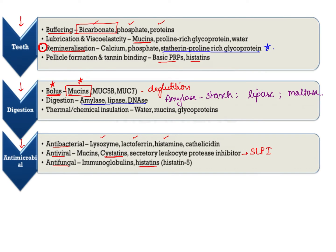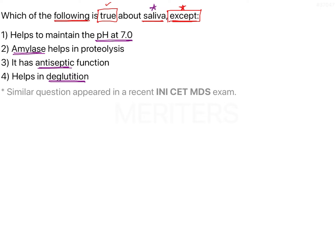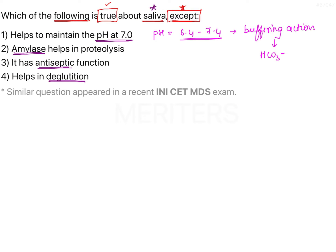Getting back to the question — we need to choose the statement which is not true about saliva. The first option says it helps to maintain the pH at 7. The normal pH of saliva is in the range of 6.4 to 7.4, and this pH is maintained because of the buffering capacity of saliva, elicited predominantly by bicarbonate, with proteins and phosphates also playing important roles. Therefore, option one is a true statement.